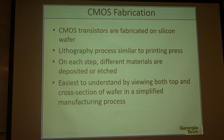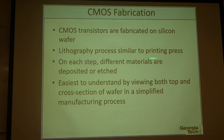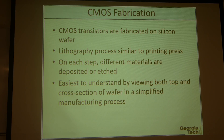Before getting into details, I'll point out the most critical parts in the fabrication process. Transistors are made on the silicon wafer, and in each step, different materials are deposited and etched after a photolithography process, which is similar to a printing press. It is easiest to understand how the structures are made by looking at both the top and cross-sectional views. The next slides will be explained with top and cross-sections with a simplified manufacturing process.